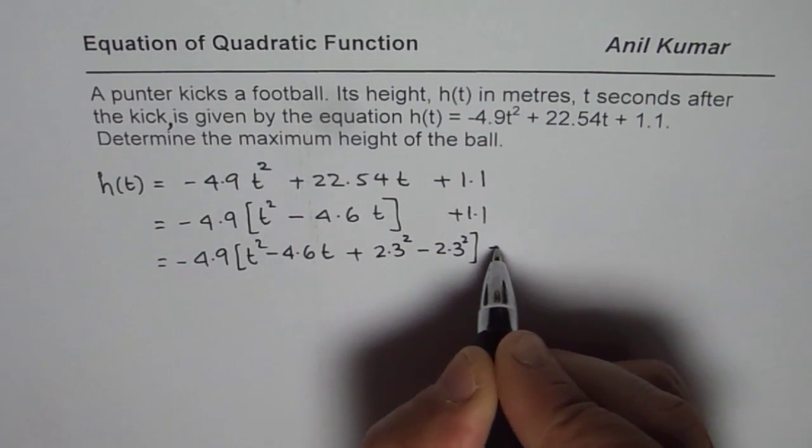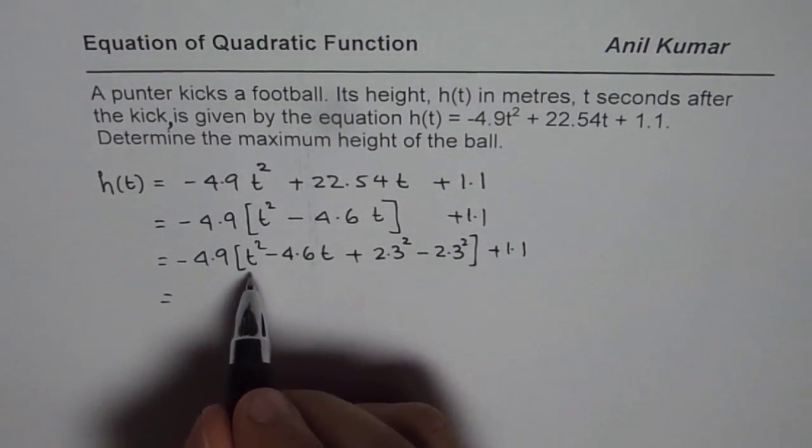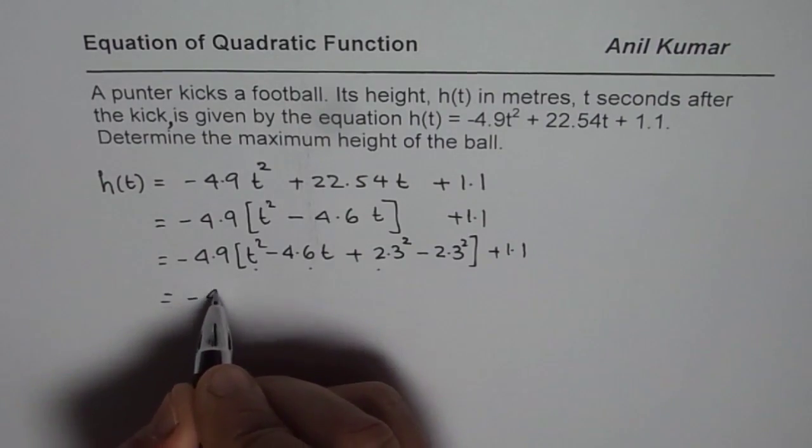Close the brackets, plus 1.1. Now, that makes first three terms as a perfect square. That is, completing the squares.